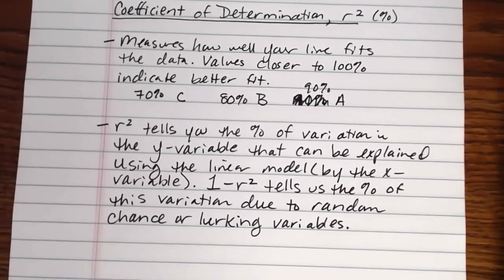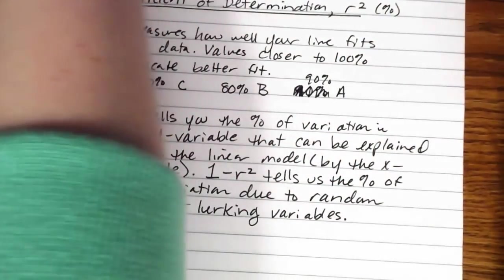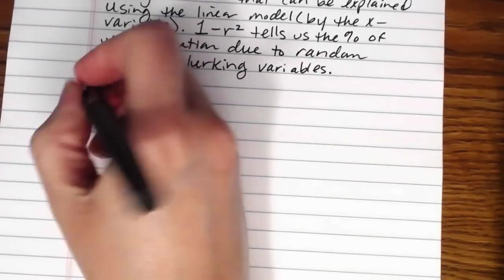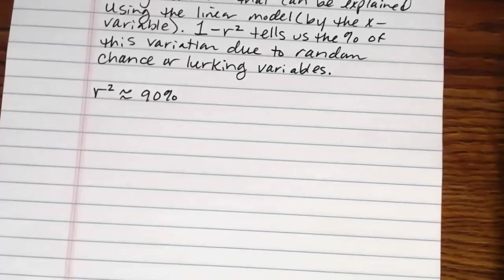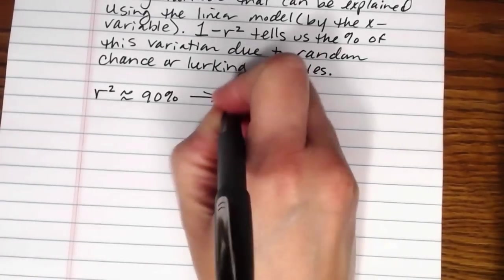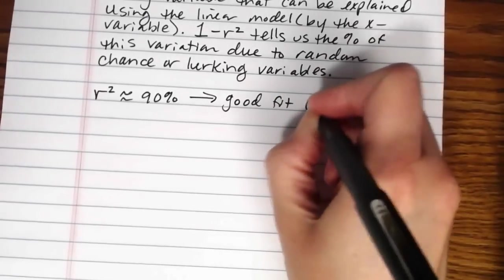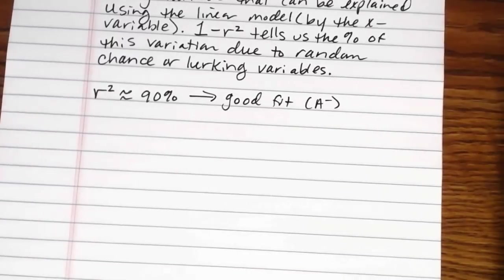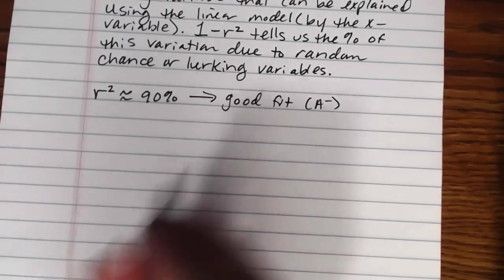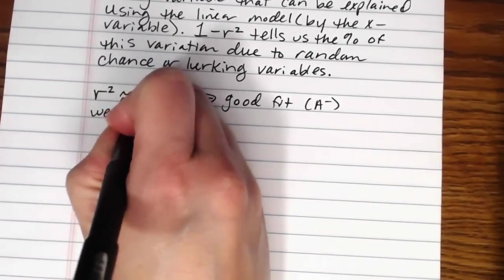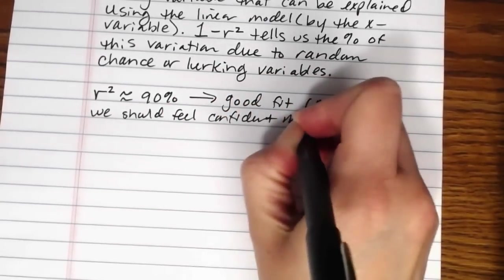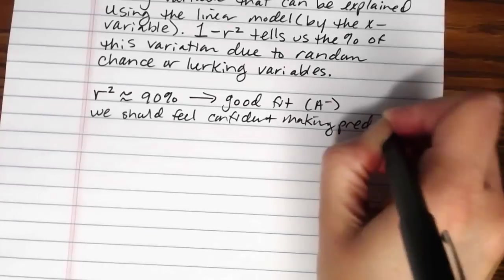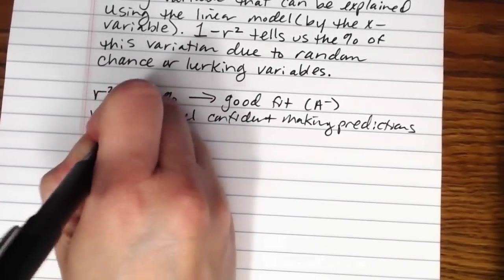So in this case, our r squared for our data is about 90%. And so what does that mean? First of all, it tells us this is a good fit, right? Actually, it's a really great fit. It's essentially an A minus fit. That's really nice. We should feel very confident using this line to make predictions. Provided that we are interpolating.